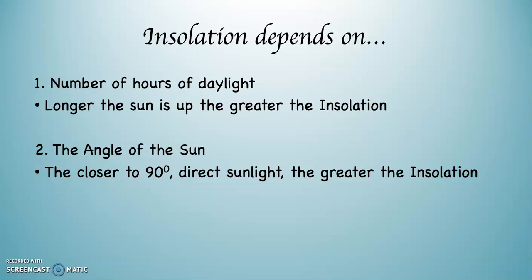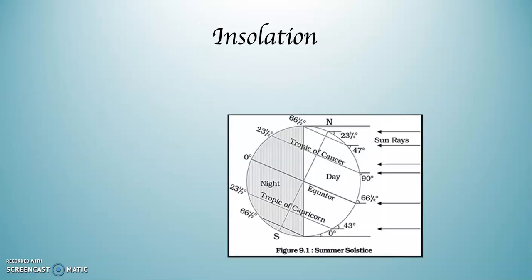So these are the two things. The number of hours of daylight. In order to heat things up, you want to have long daylight periods and the angle of the sun. The closer you can get the sun to a 90 degree angle, the more energy you are going to get from the sun.